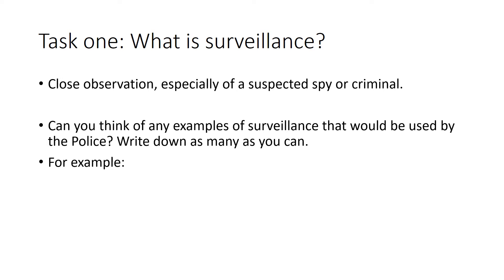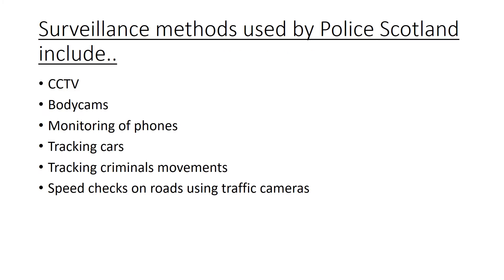Now some of the points you could have had. CCTV is one form of surveillance used by the police. Body cams are used by Police Scotland. Monitoring of phones — so hacking phones to monitor them. Tracking cars — putting tracking devices on cars. Tracking criminals' movements, so that could be following criminals. And speed checks on roads using traffic cameras. That's just some of the surveillance methods used by Police Scotland.